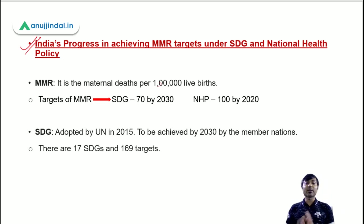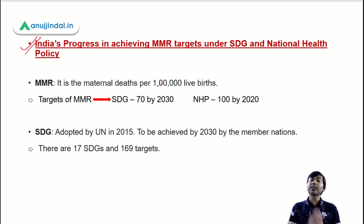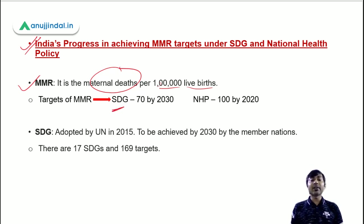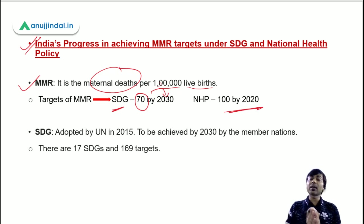The first news is about India's progress in achieving maternal mortality ratio targets under SDG and national health policy — sustainable development goals and national health policy targets. MMR is the maternal deaths per 1,00,000 live births — that is known as maternal mortality ratio. SDG's target is 70, to be achieved by the year 2030. According to the national health policy, the MMR should be 100 by the year 2020.